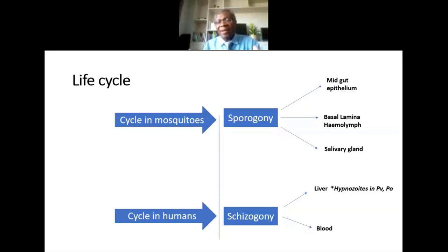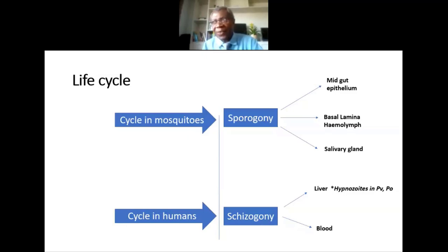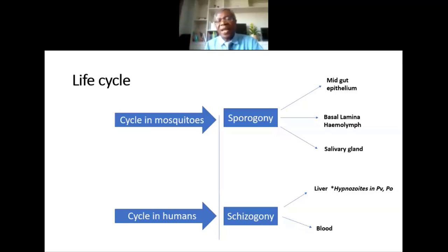We are not yet certain whether dormant forms exist in other Plasmodium species, but that will be discussed shortly. This is the overall picture of how the parasites are transmitted from the mosquito into the blood. The key question then is: how does this life cycle fit into what we do during elimination?